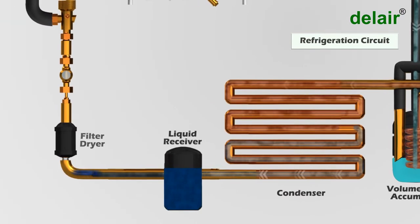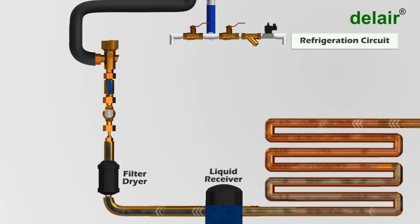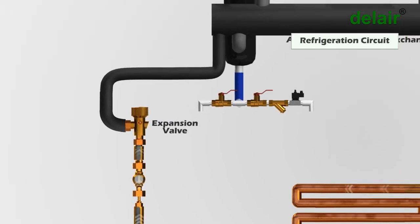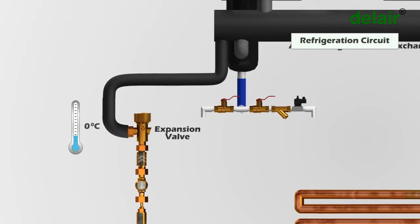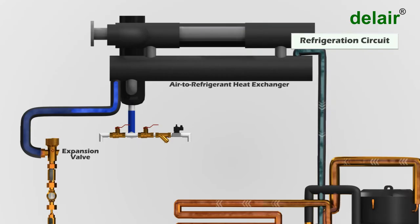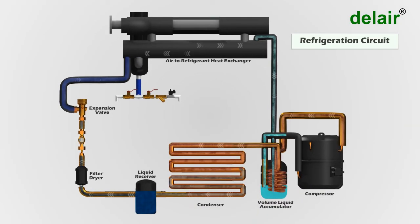The liquid then travels through a filter where impurities are absorbed. The liquid refrigerant then passes through an expansion valve which reduces the pressure, leading to a reduction in its temperature down to zero degrees Celsius. This enters into the air-to-refrigerant heat exchanger and the heat from the hot compressed air is absorbed by the cold refrigerant. This refrigerant is then sucked by the compressor and the cycle starts over again.